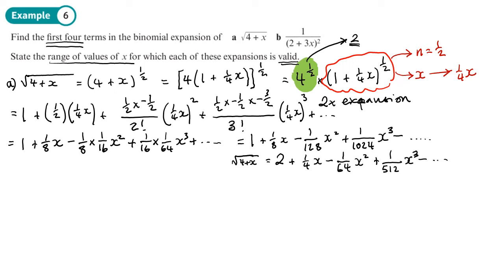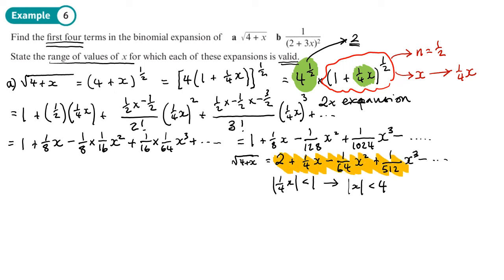So the expansion of √(4+x) is valid when |x| < 4. Let's highlight the expansion and highlight when it's valid.